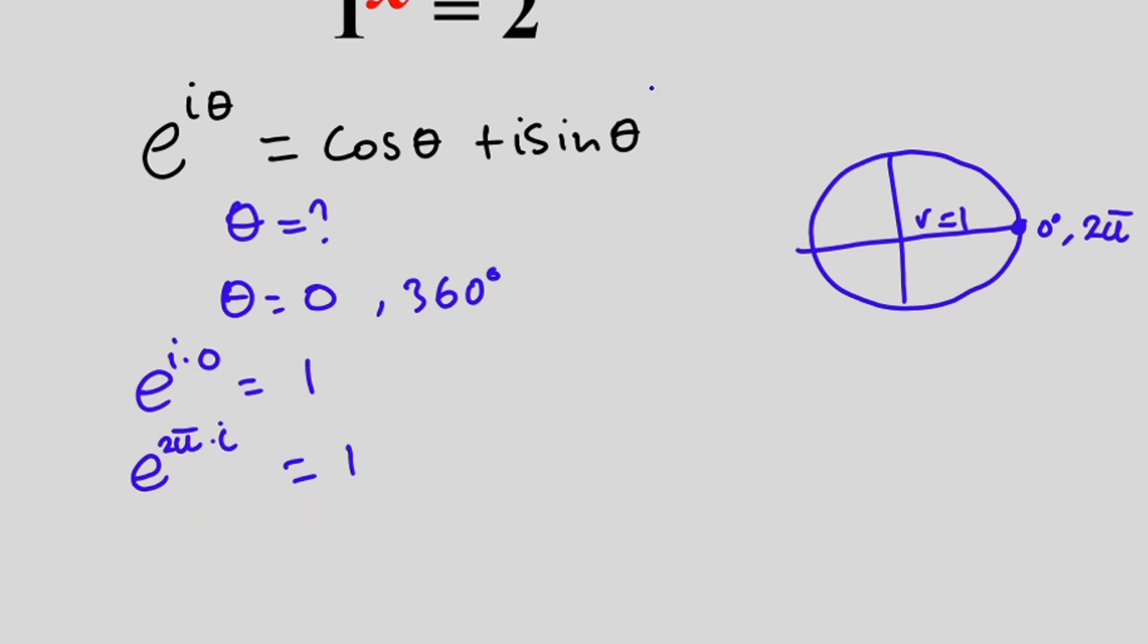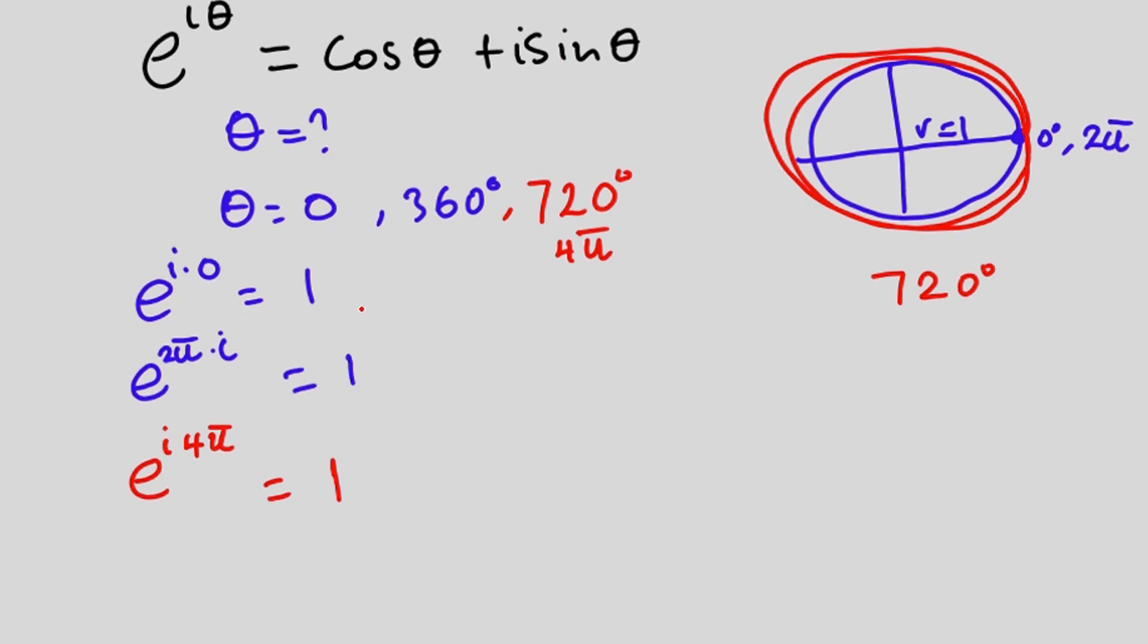Now, if we move 360 twice, we're going to have 1, that is 2 pi, then 2, that is 4 pi, that will be 720 degrees. So theta will be equal to 720 degrees. Then in radians, it will be 4 pi. Now, if we put this one in Euler's equation, we're going to have e to the power i times 4 pi is equal to cos of 720, that will be 1, then sin of 720 is 0. So in either case, we are getting 1.